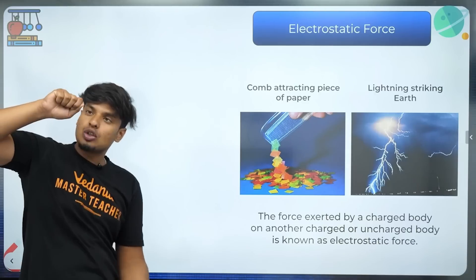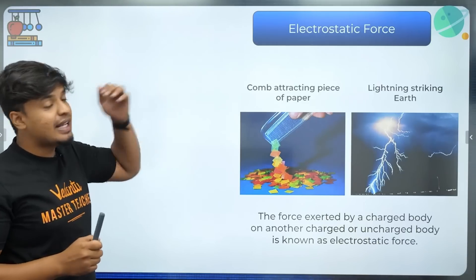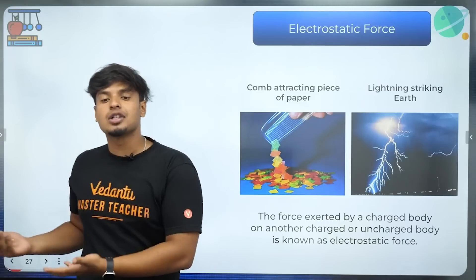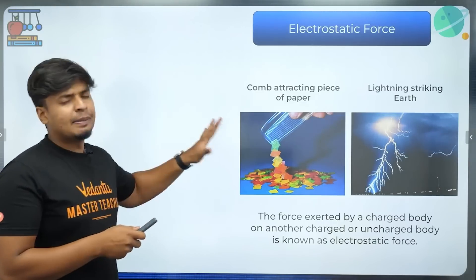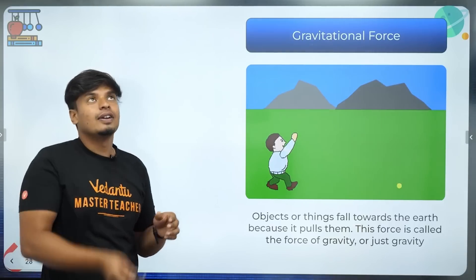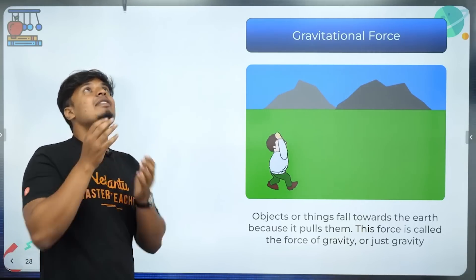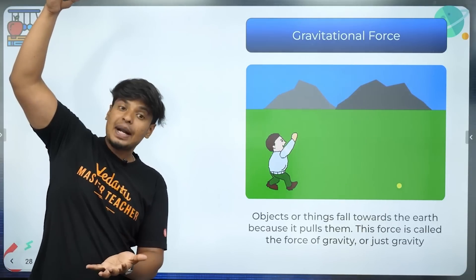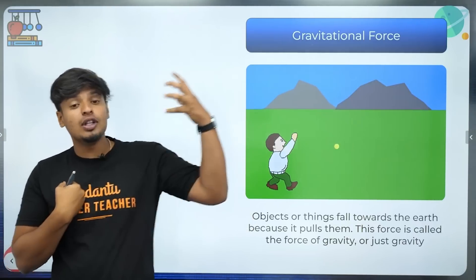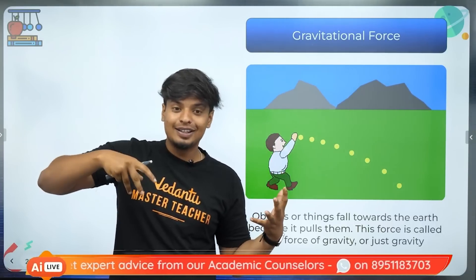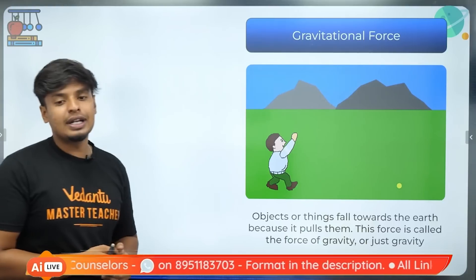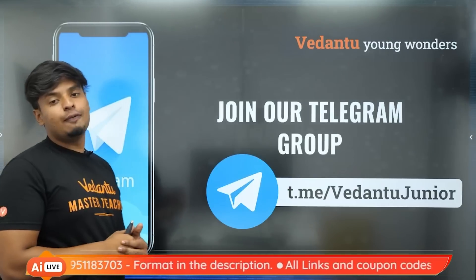Non-contact forces include magnetic force, gravitational force, and electrostatic force. Electrostatic force example: if you rub a comb on hair, it attracts pieces of paper — they're not touching. Lightning striking the earth is also electrostatic force. Gravitational force: if you throw something up, it comes back down. Gravity pulls it down without being in contact with it. Earth exerts force on the moon; the sun exerts force on the earth — they're not touching, so gravity is a non-contact force.